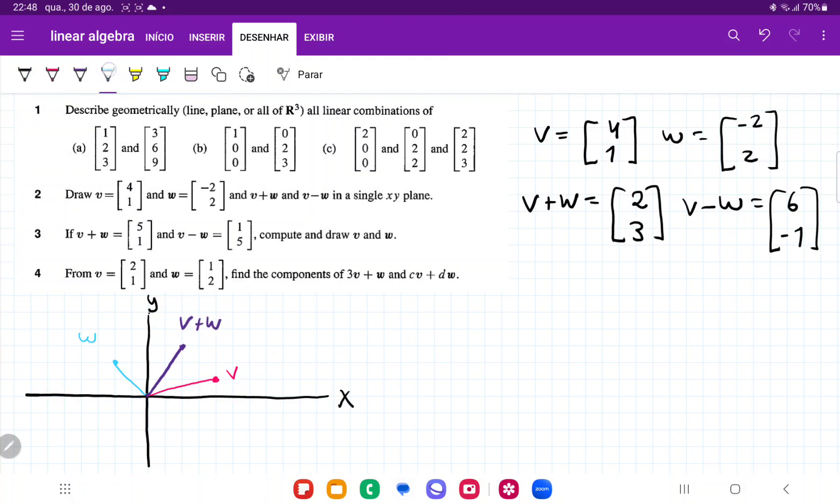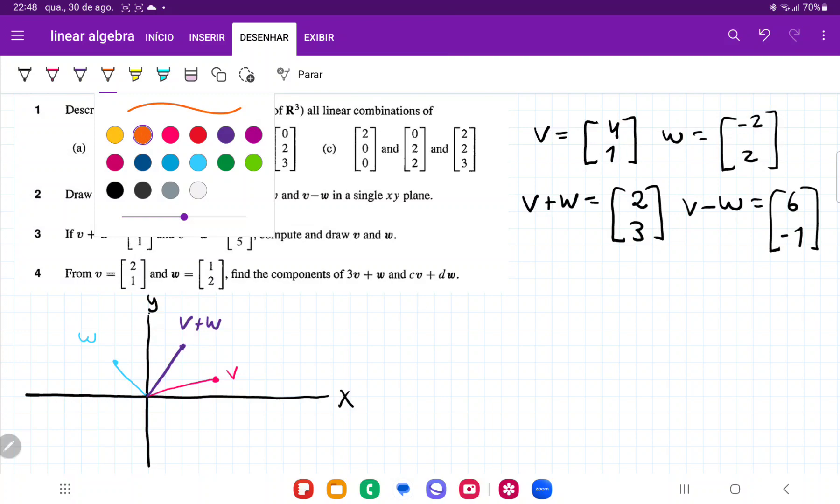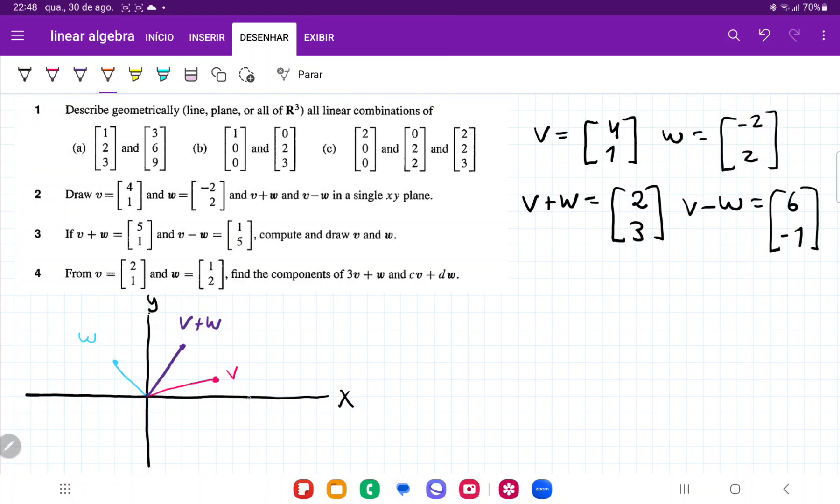And then we are going to have v minus w, which is at 6, 1, 2, 3, 4, 5, 6, and -1. So here is going to give us v minus w, and that is it for number 2.